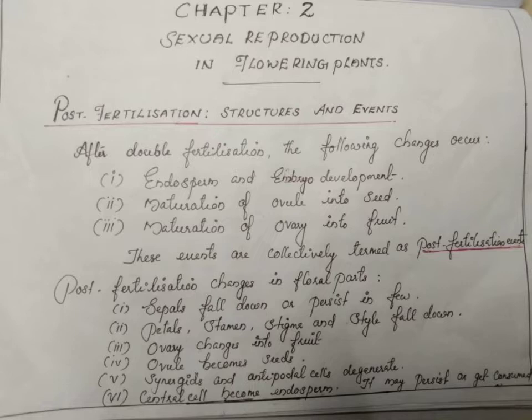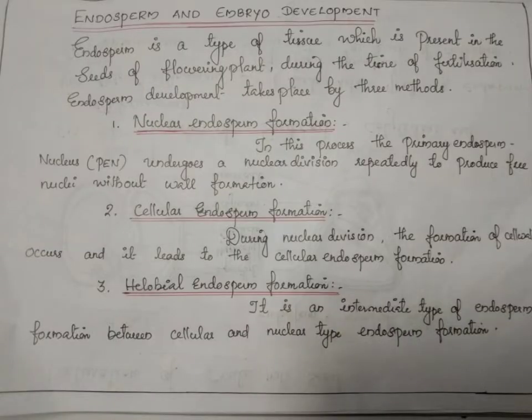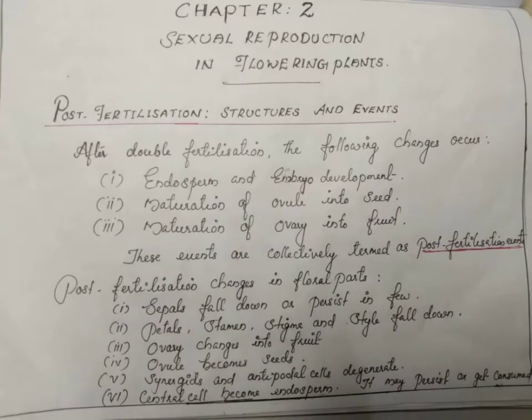Endosperm is a type of tissue which is present in the seeds of flowering plants during the time of fertilization. Then the seed will grow, the ovule will grow, and the ovule develops into fruit. These three events are collectively termed as post-fertilization events.